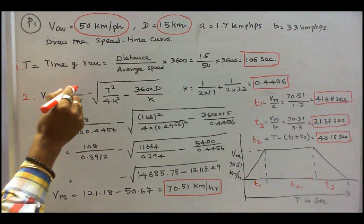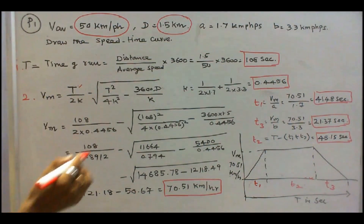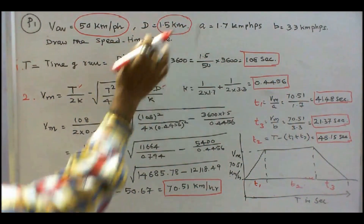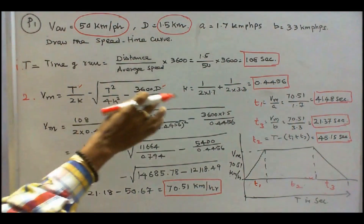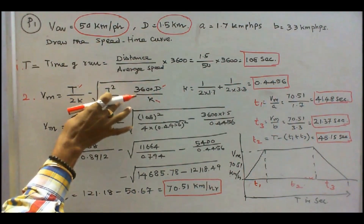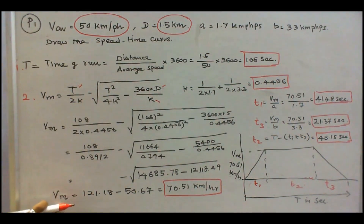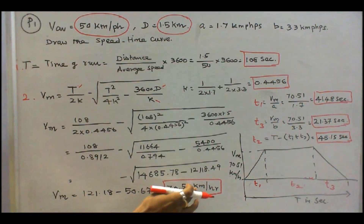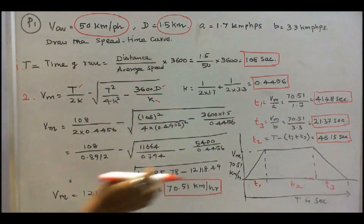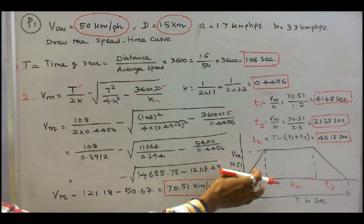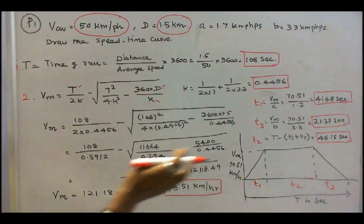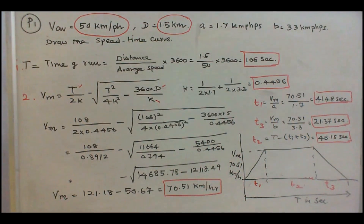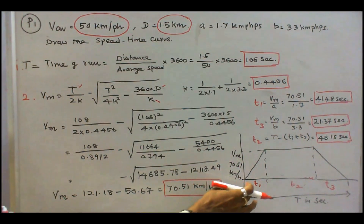We know T equals 108, d equals 1.5, and k equals 0.4456. Substituting all these values into the equation, we find maximum speed vm equals 70.51 km per hour. This gives us the key parameter for the speed-time curve.